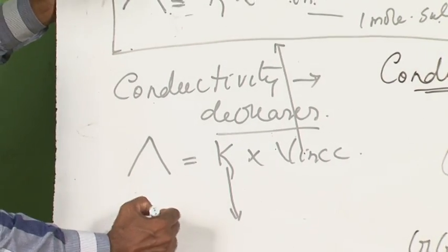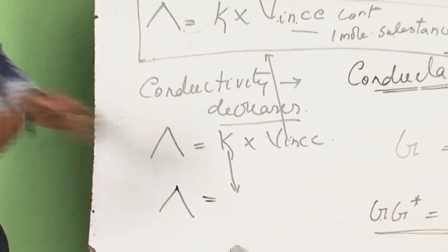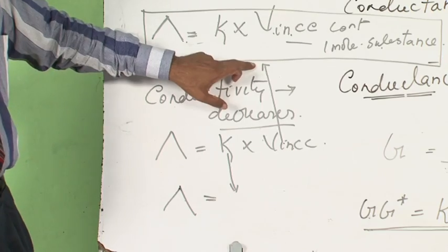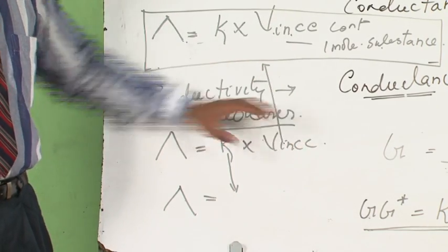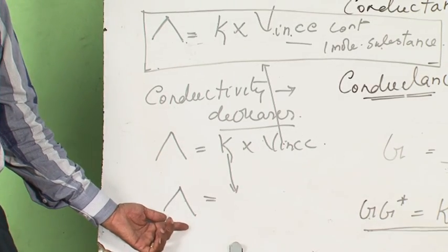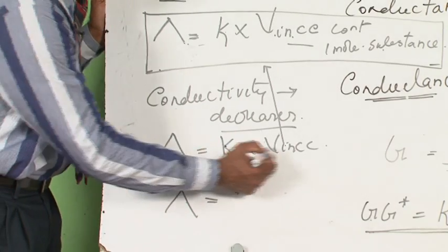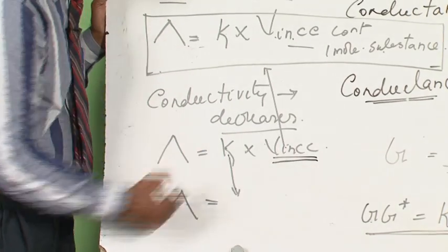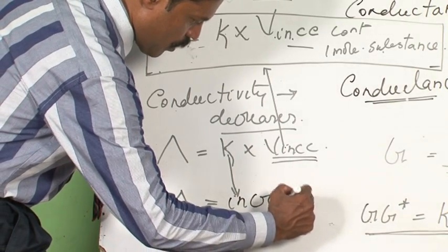So what happens to the lambda? Suppose this decrease and increase maintains the same rate - there should not be any change in lambda. But the decrease in kappa is more than compensated by the increase in volume. So you see that lambda always increases with dilution.